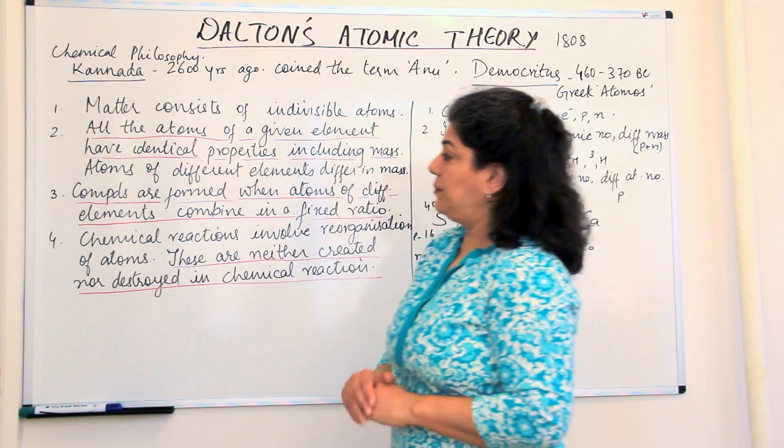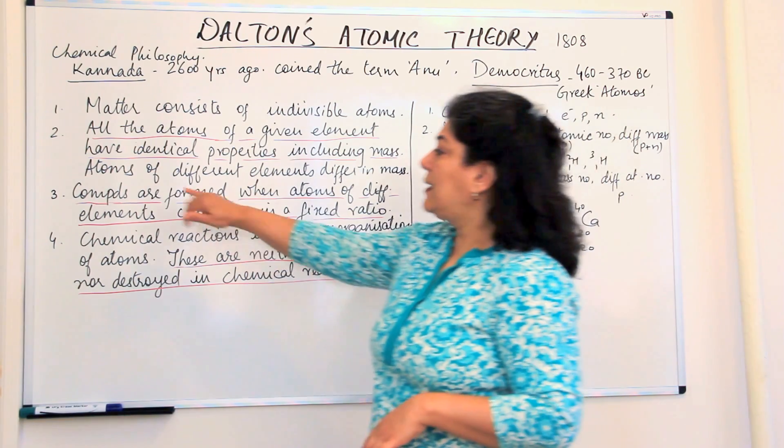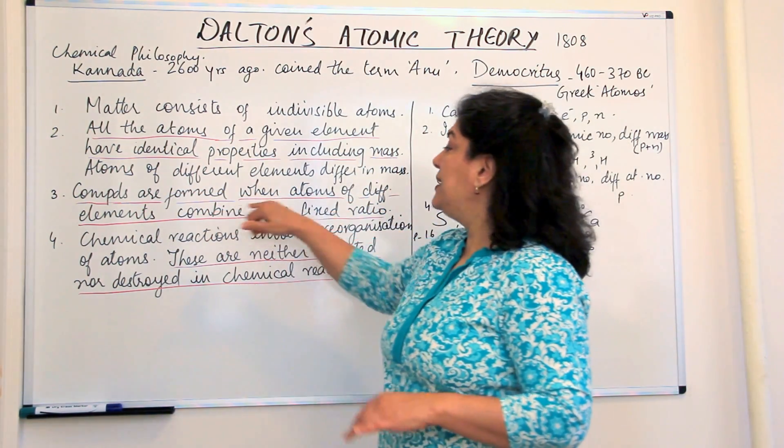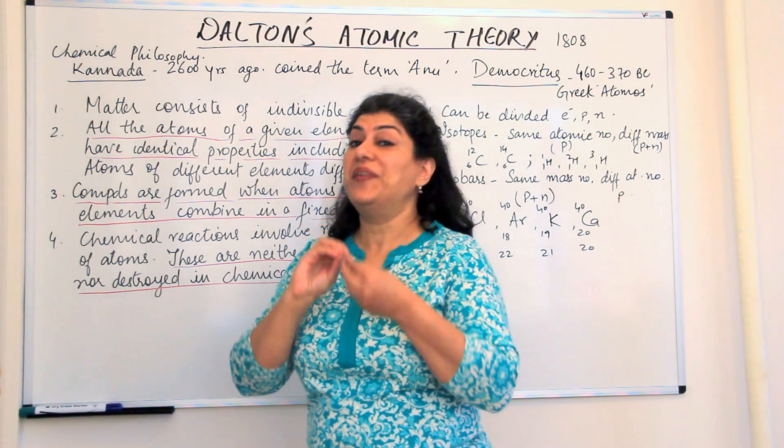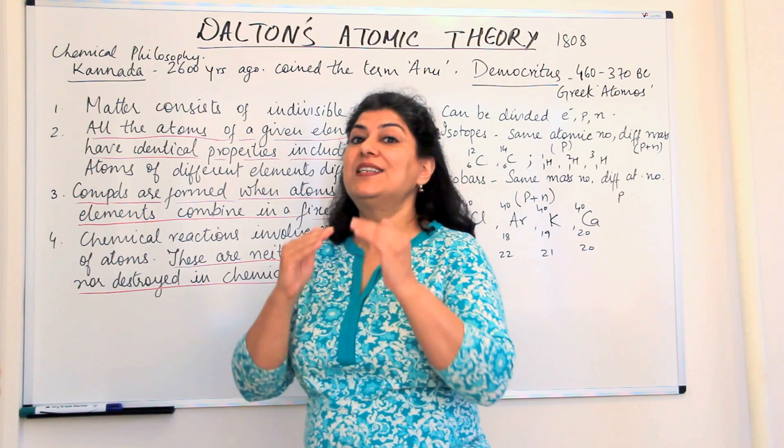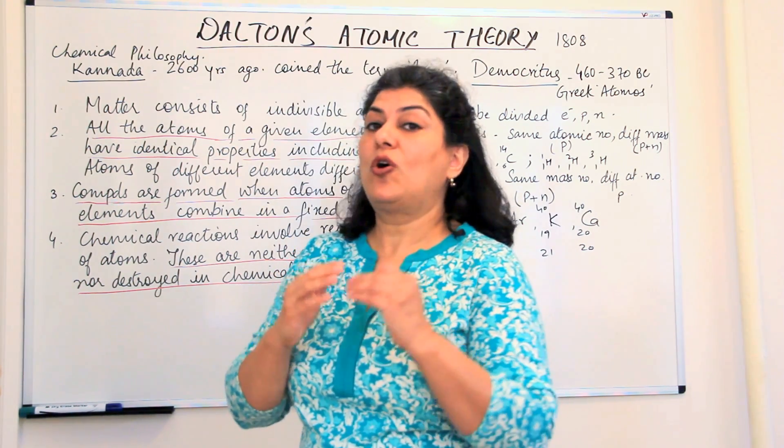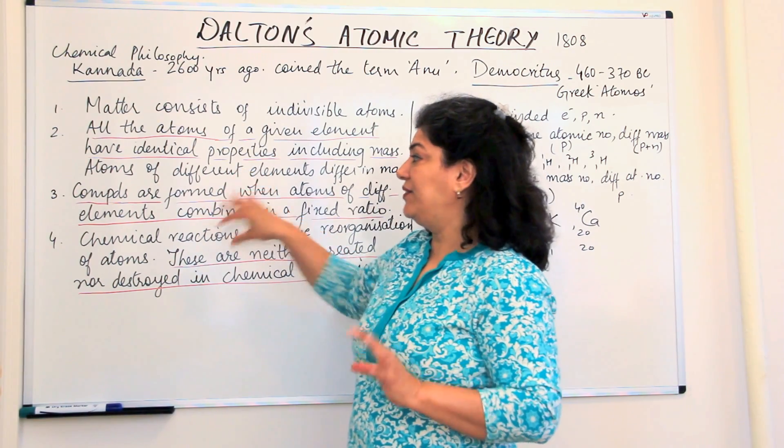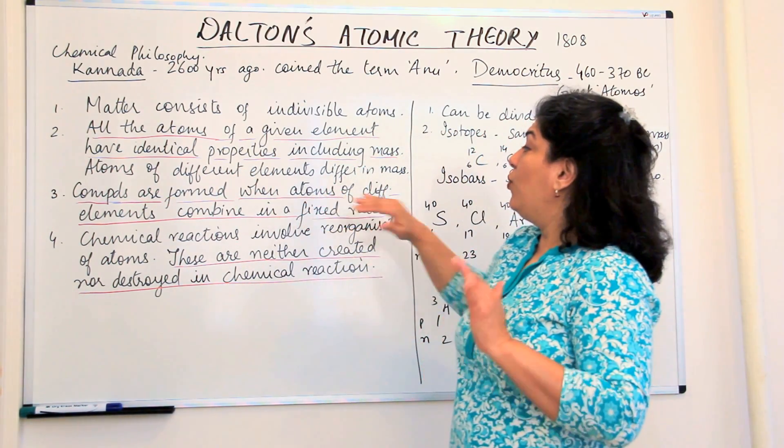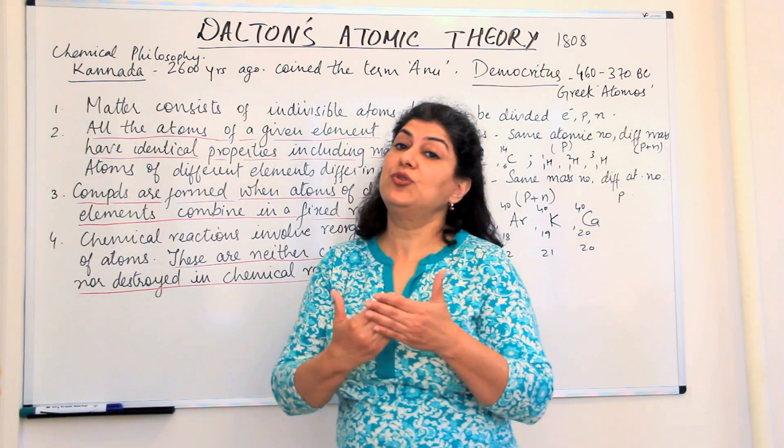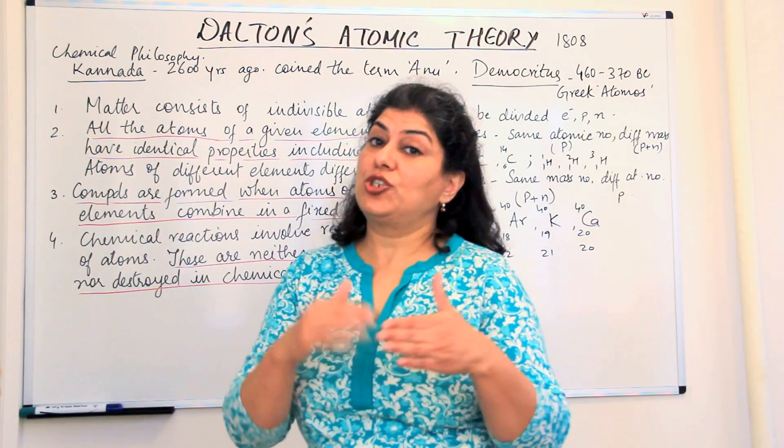The third point was that compounds are formed when atoms of different elements combine in a fixed ratio. Fixed ratio, the law of constant composition or constant proportions. This is what you can derive from that, that compounds are formed when atoms of different elements combine in a fixed ratio. That was known as the law of constant composition.